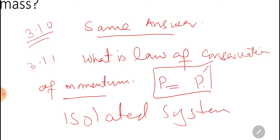Question 3.13: when a gun is fired, it recoils — why? When a gun is fired it recoils. The answer is very simple. When a gun is fired, it recoils — why do you feel a jerk in the backward direction?